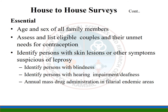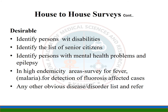Essential components of house-to-house surveys include recording age and sex of all family members, assessing the list of eligible couples and their unmet needs for contraception, identifying persons with skin lesions or other symptoms suspicious of leprosy, identifying persons with blindness, hearing impairment or deafness, and conducting annual mass drug administration in filaria-endemic areas. Desirable components include identifying persons with disability, senior citizens, and persons with mental health problems and epilepsy.